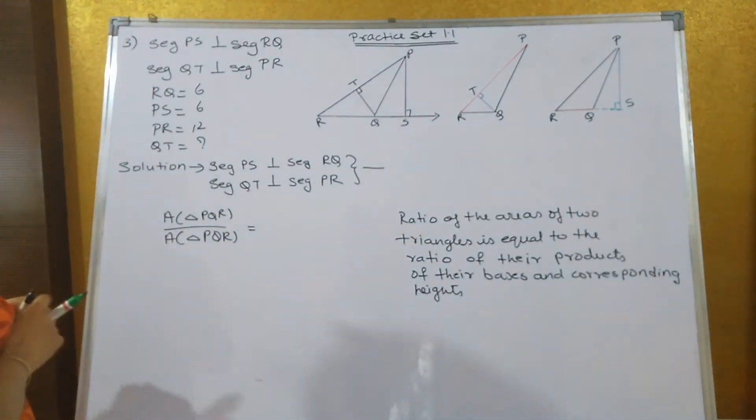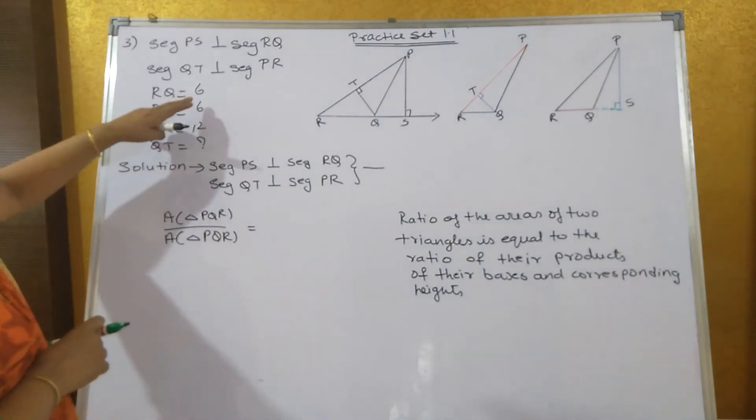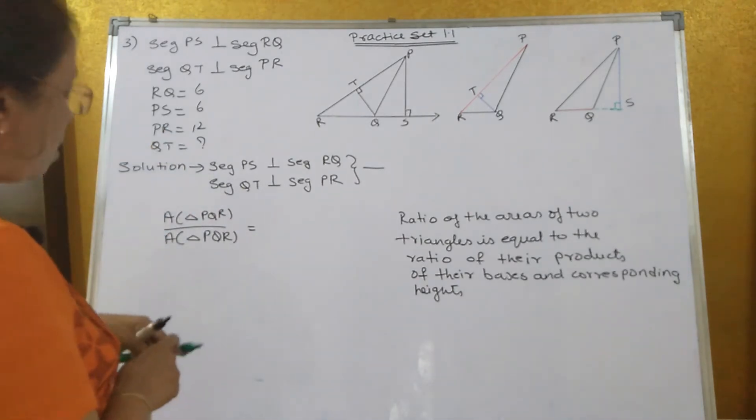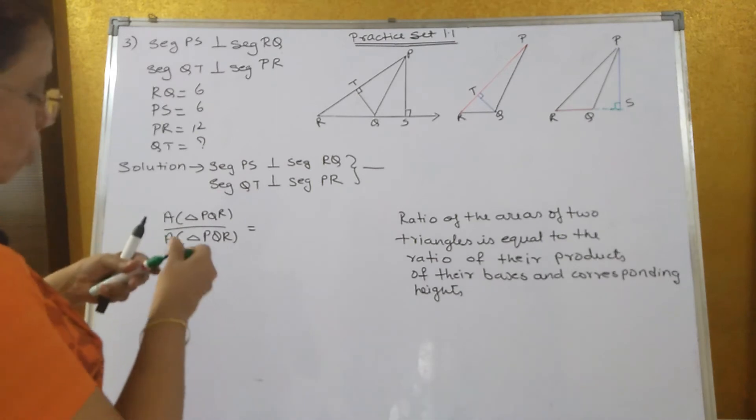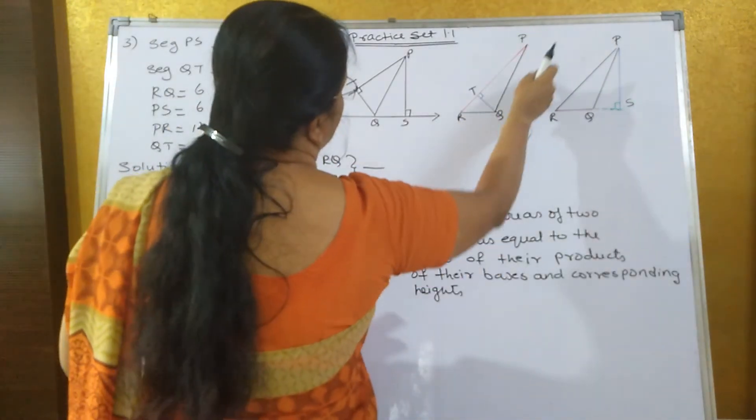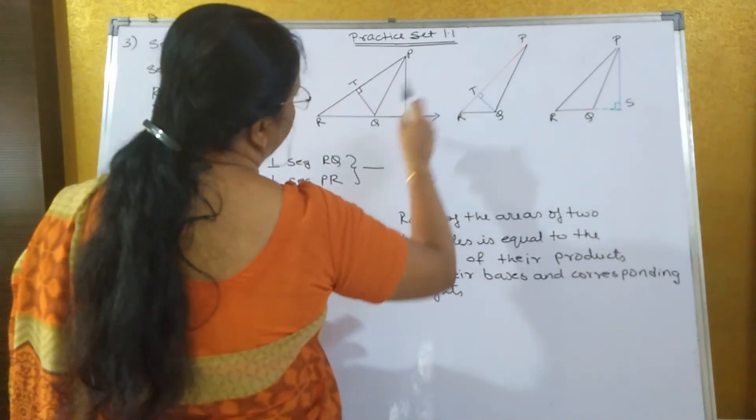And they have already given that RQ is equal to 6, PS is equal to 6, PR is equal to 12, and QT you have to find out. Now in this triangle, you can observe the triangle in two ways. Once you take the triangle this way, PQR, and QT you will take it as the height.